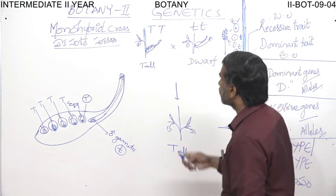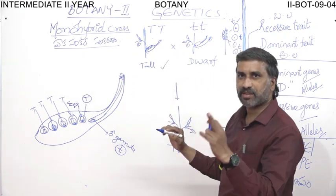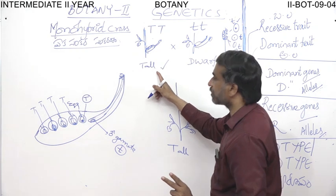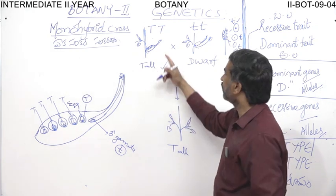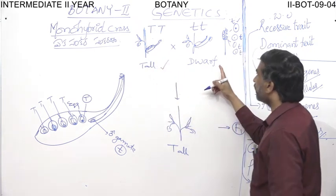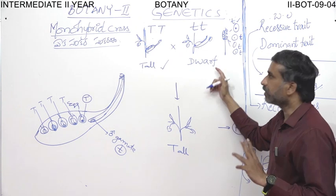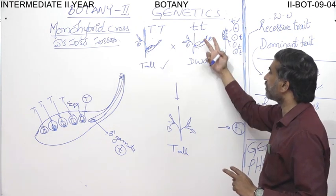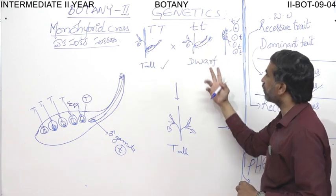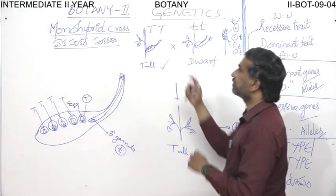Tallness is represented by two genes: capital T and capital T, because each character is controlled by two genes. To express tallness, two genes are responsible — both capital T. To express dwarfness, two genes are required, represented by small t and small t, since this is a recessive character while tallness is a dominant character.